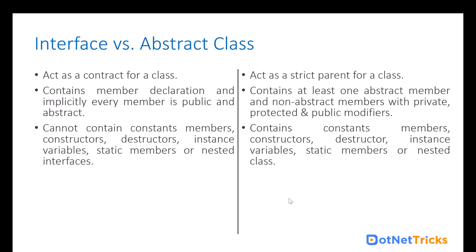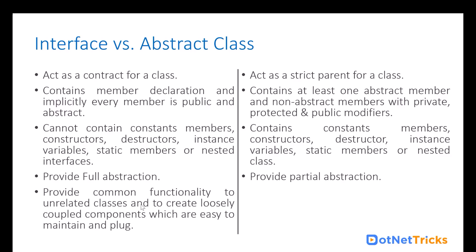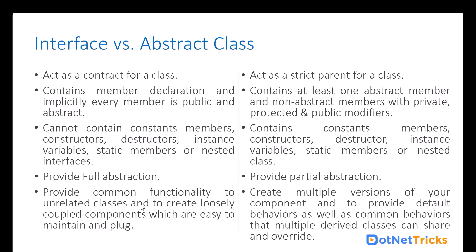Interface provides full abstraction. So whenever there is a requirement to create full abstraction, you should go ahead with the interface. Abstract class provides partial abstraction, because here we have a chance of having non-abstract methods. You should use interface whenever you are willing to provide common functionality to unrelated classes so that you can create loosely coupled components which are easy to maintain and plug-and-play. Whenever there is a requirement to inject one component into another, interface is helpful because interface-based implementation is easy to plug and play. You should use abstract class whenever you are going to create multiple versions of your component, to provide default behavior as well as common behavior that derived classes can share and override as per their requirement.